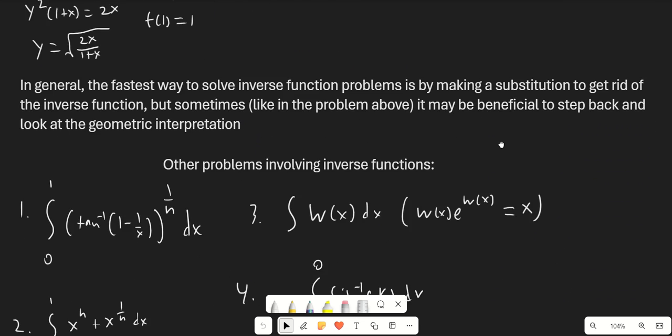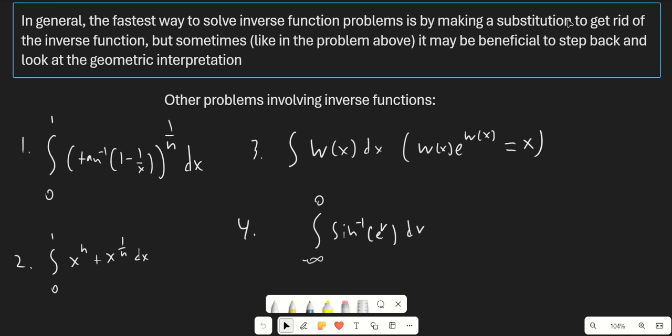In general the fastest way to solve these problems is to make a substitution to get rid of the inverse function. But very rarely, like in the problem I just showed, it may be easier to step back and look at the geometric interpretation, because in that last problem it would not have been faster to go through the whole formula since f(x) and f inverse of x were not the simplest functions.